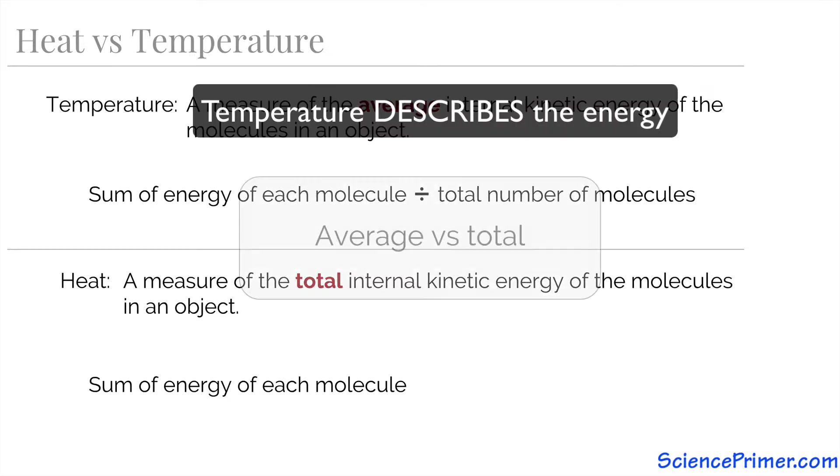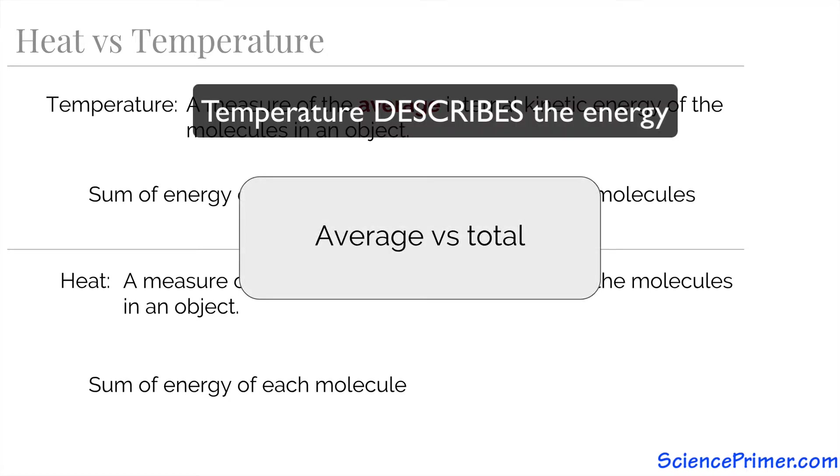As an average, temperature is a description of the amount of energy in an object, while heat is the actual amount of energy present.